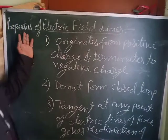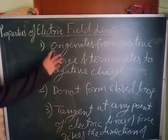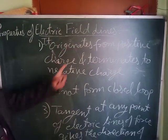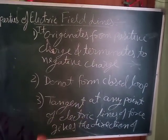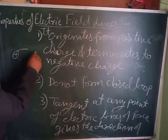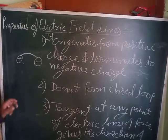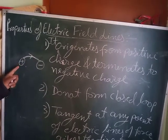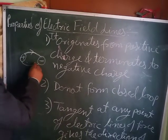Next topic is properties of electric field lines. First property: it originates from a positive charge and terminates at a negative charge. Second property: electric field lines do not form a closed loop, because they originate from positive charge and terminate at negative charge so they cannot form a closed loop. Also, they are discontinuous between charge particles — a unit positive charge cannot go inside the charge particle, so they never form a closed loop.